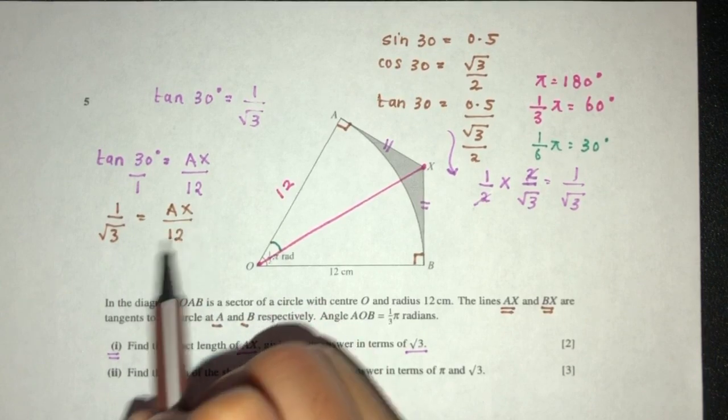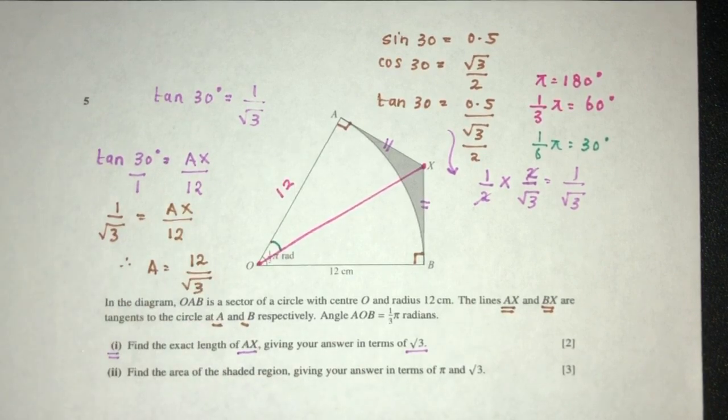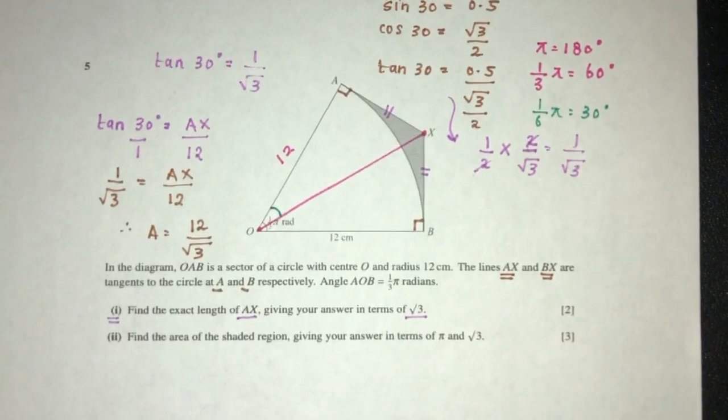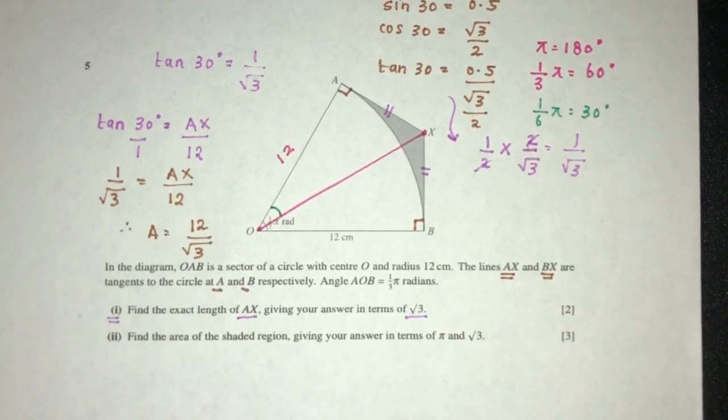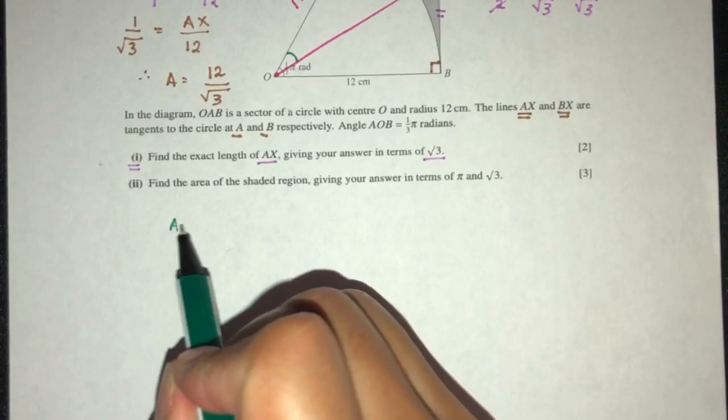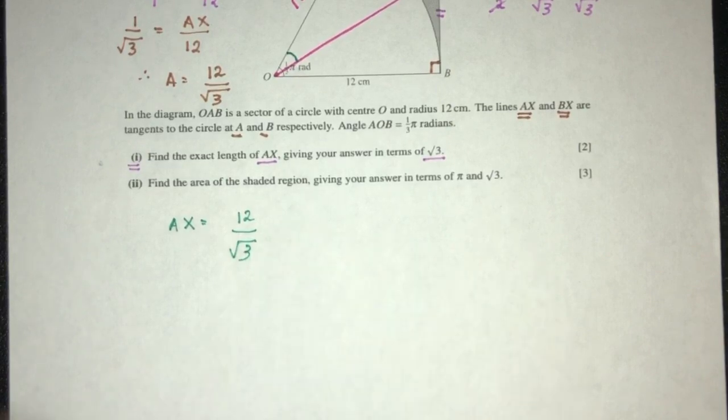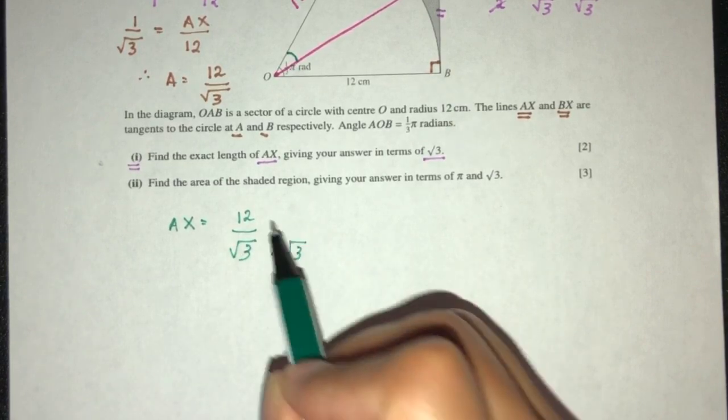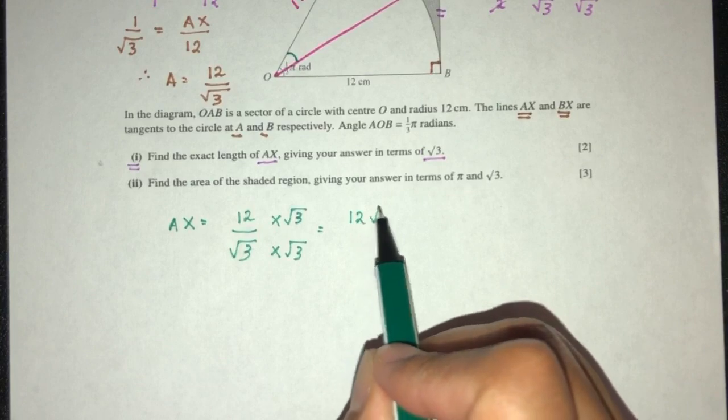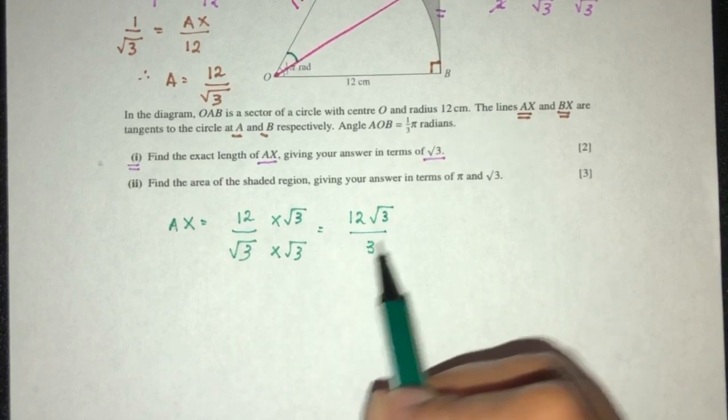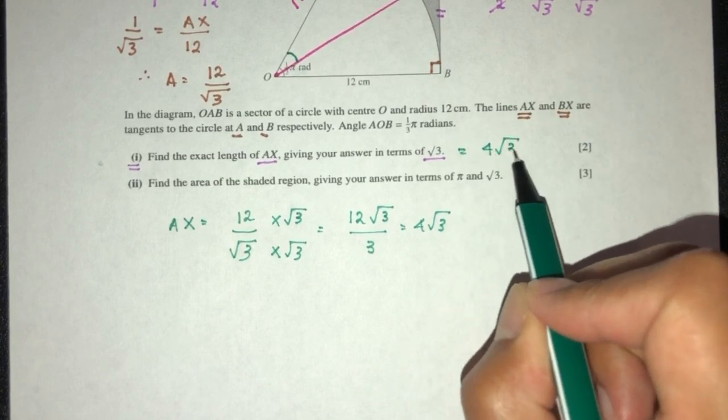So tan 30 is 1 over √3 equals AX over 12, which means AX has to be 12 over √3. I can multiply both sides by √3. That will be 12√3 over 3, which is 4√3. So AX will be 4√3 as your exact value.